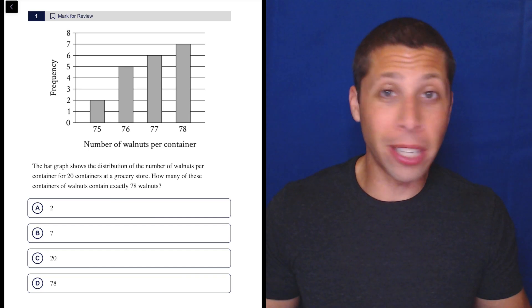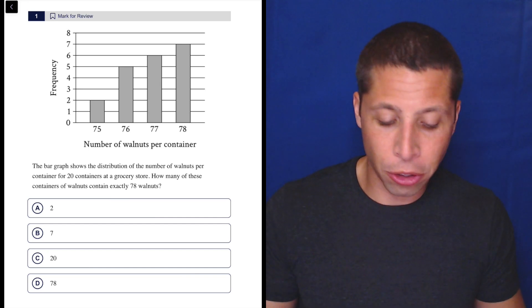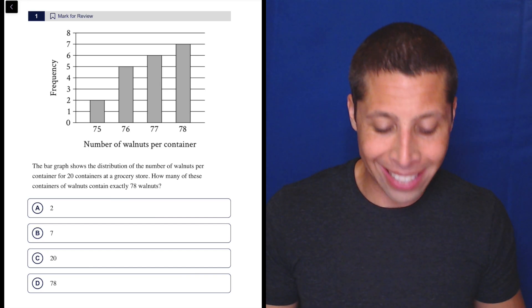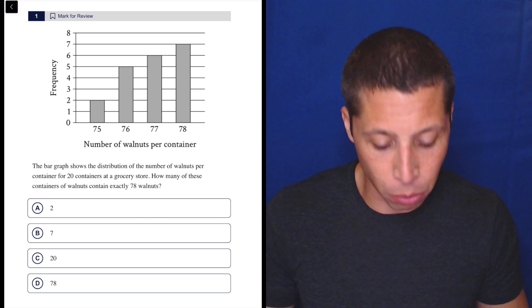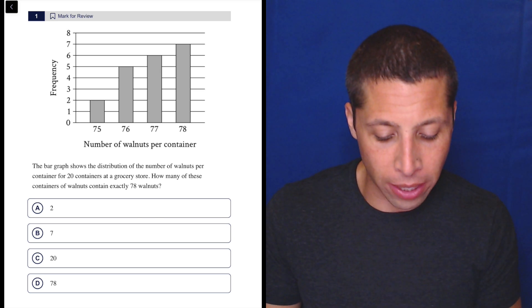Some questions are just about reading carefully. The bar graph shows the distribution of the number of walnuts per container for 20 containers at a grocery store.